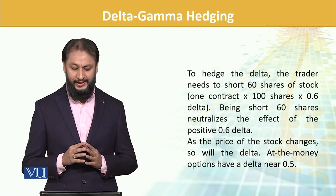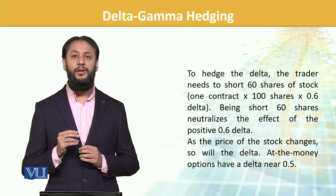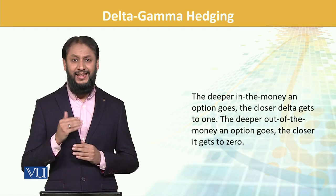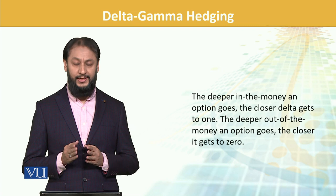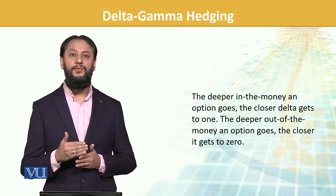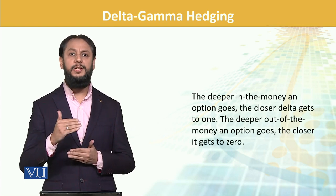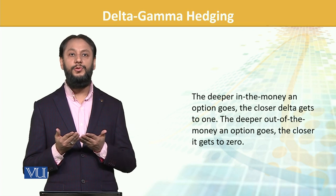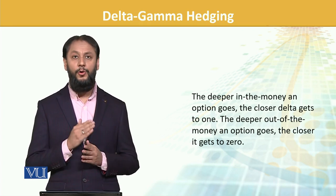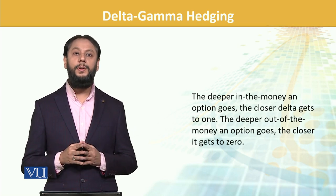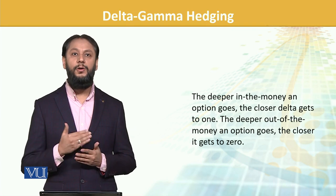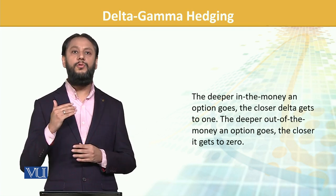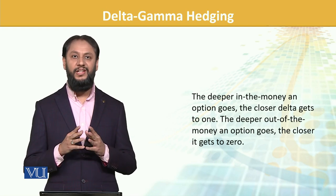As the price of the stock changes, so will the delta. At-the-money, an option will have a delta near 0.5. The deeper in-the-money an option goes, the closer delta gets to one — because the option is very beneficial to exercise, so its value moves toward one. Conversely, if the option is far out-of-the-money, the option's value starts going close to zero because the likelihood of benefit is greatly reduced. So in-the-money approaches one, far out-of-the-money approaches zero, and at-the-money is around 0.5.